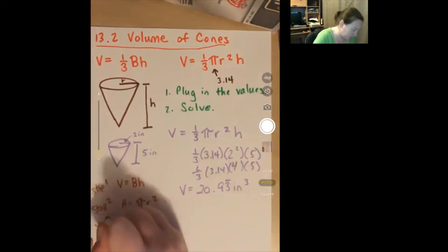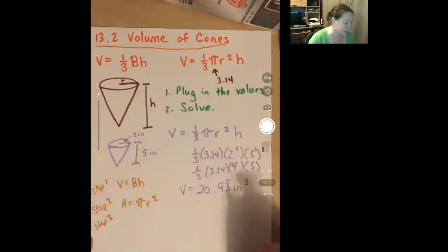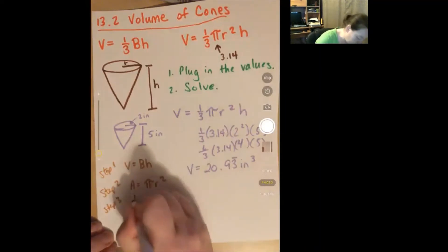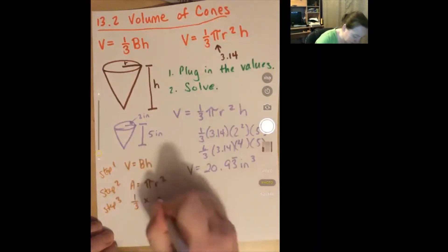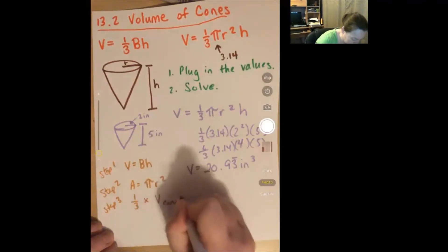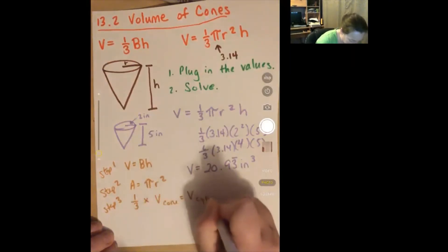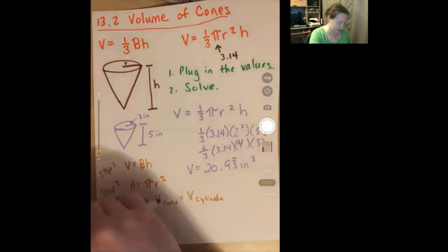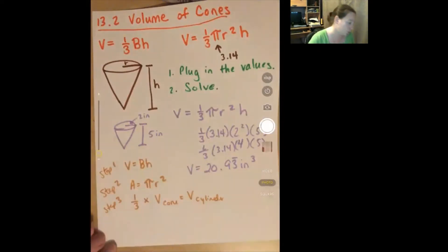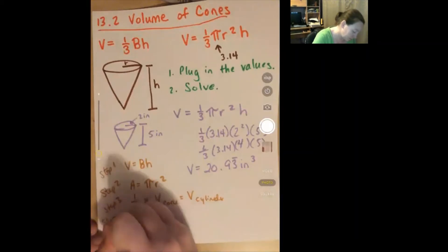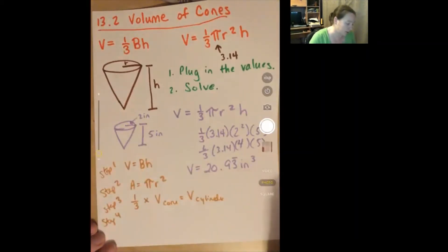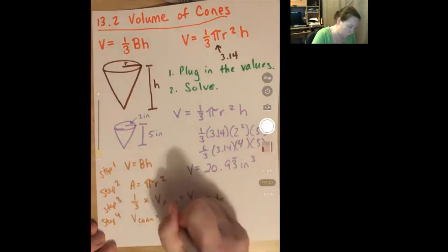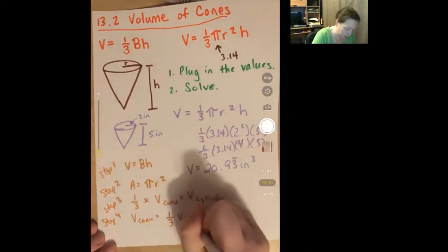Step three: Sandy found the bases and heights are the same, so one-third times the volume of the cone equals the volume of the cylinder. Step four: how does the volume of the cone compare to the volume of the cylinder? The volume of the cone is equal to one-third the volume of the cylinder. All this highlighted content corresponds to the steps on your page 407.